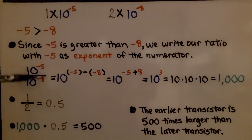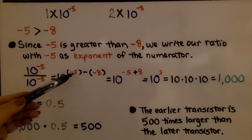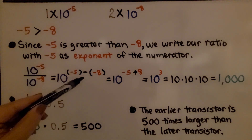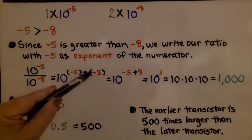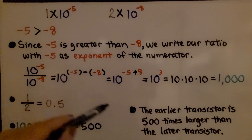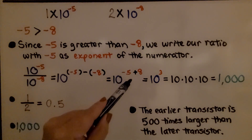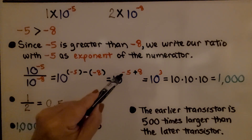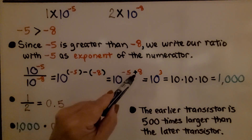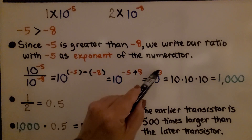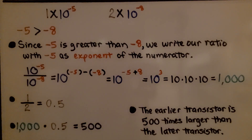We do subtraction: negative five minus negative eight. Remember, when we're subtracting a negative, we add the opposite. So we really have negative five plus eight, which gives us ten raised to the third power. That's ten times ten times ten, which equals one thousand.